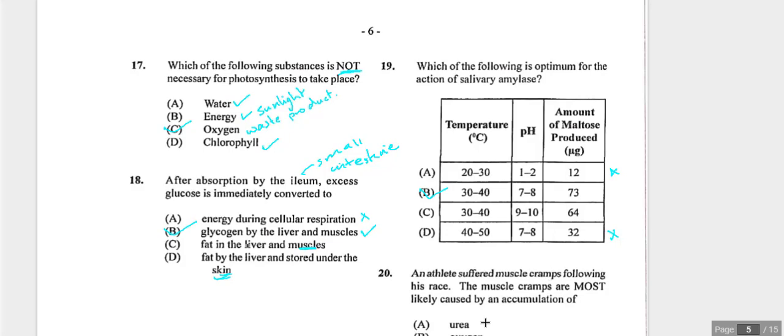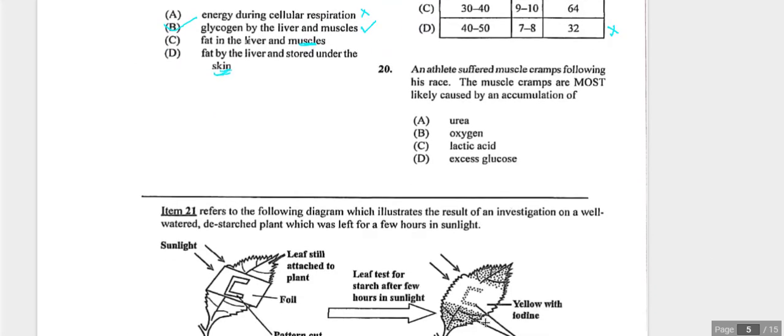Question twenty: an athlete suffers muscle cramps following a race. Muscle cramps result from anaerobic respiration, which produces lactic acid. Answer is C — lactic acid accumulation.